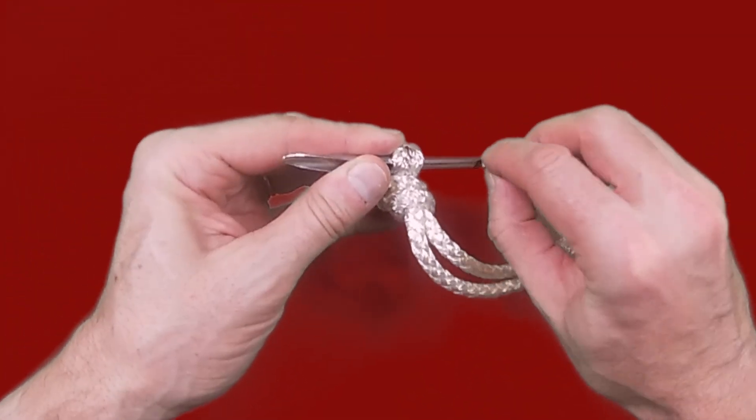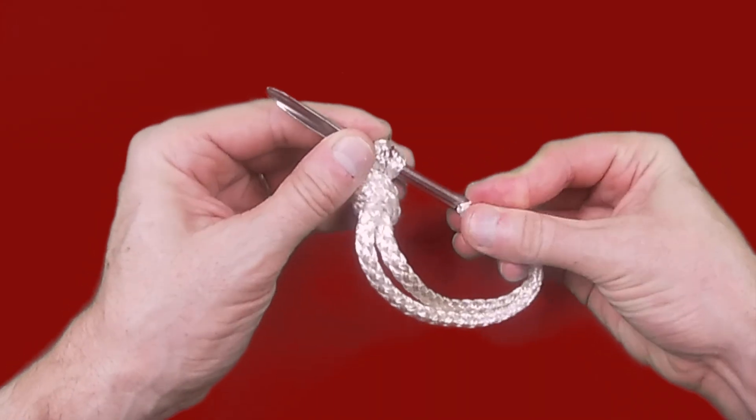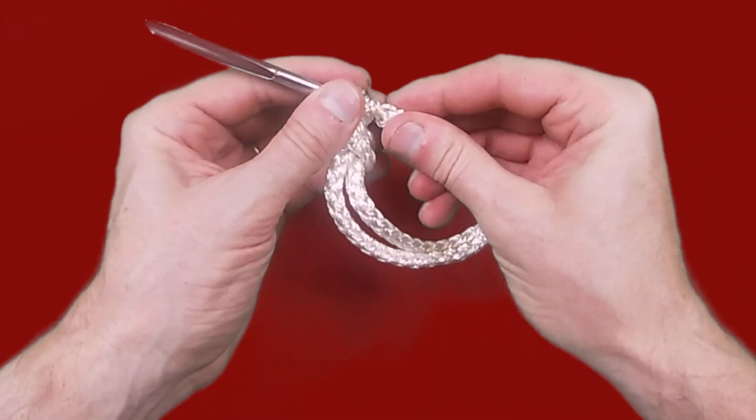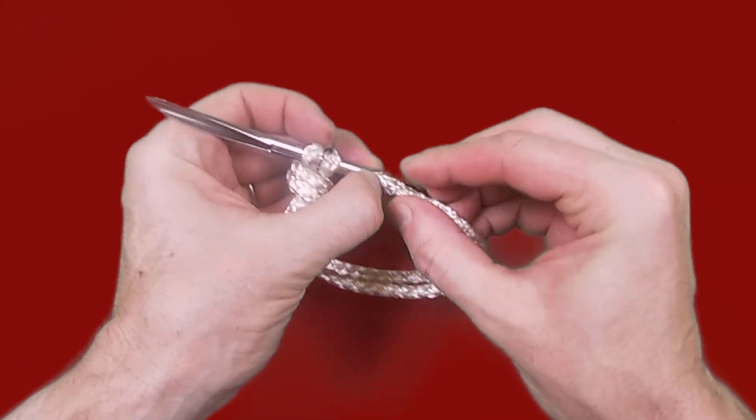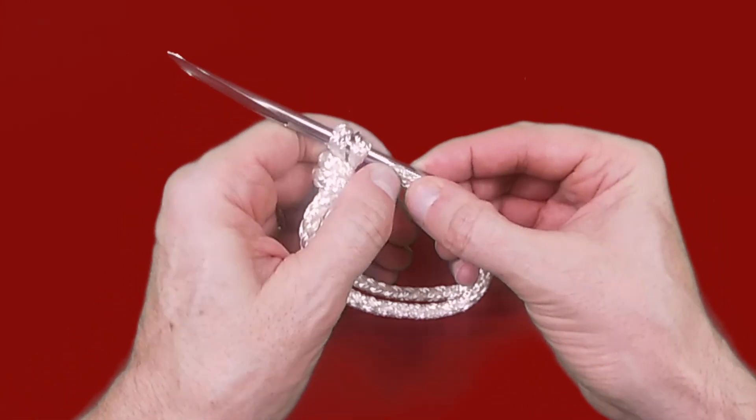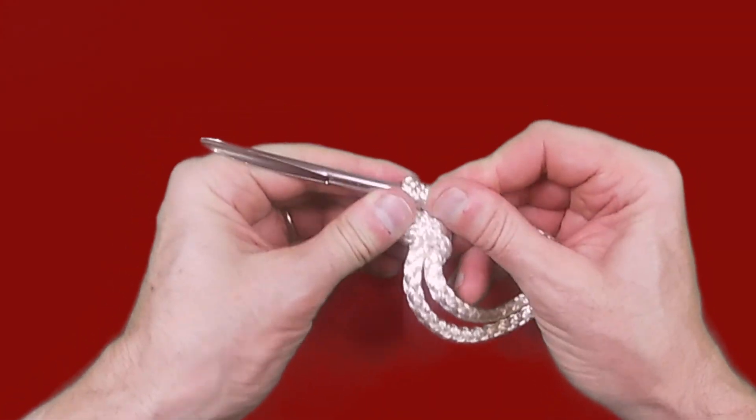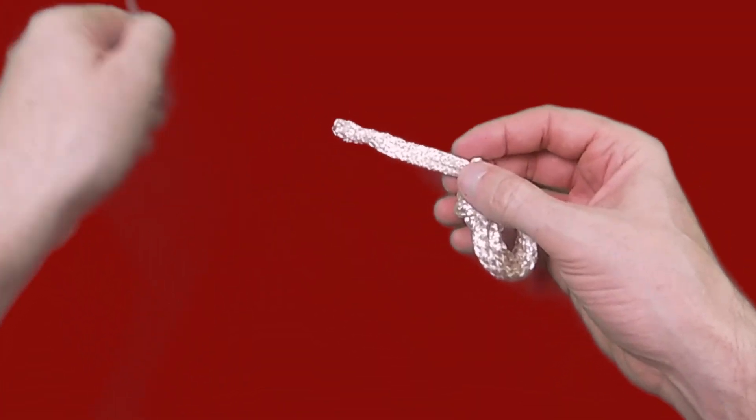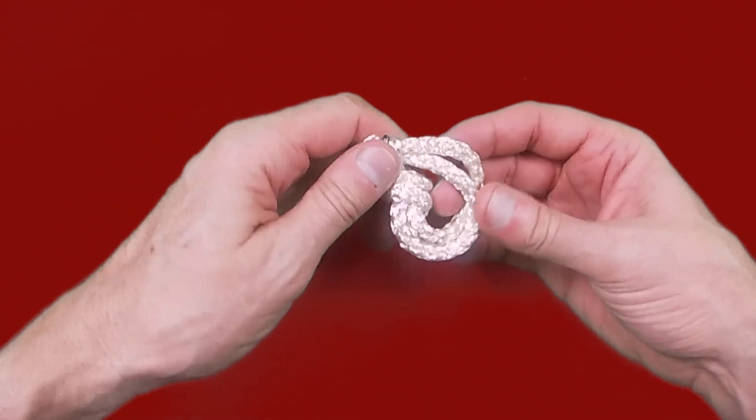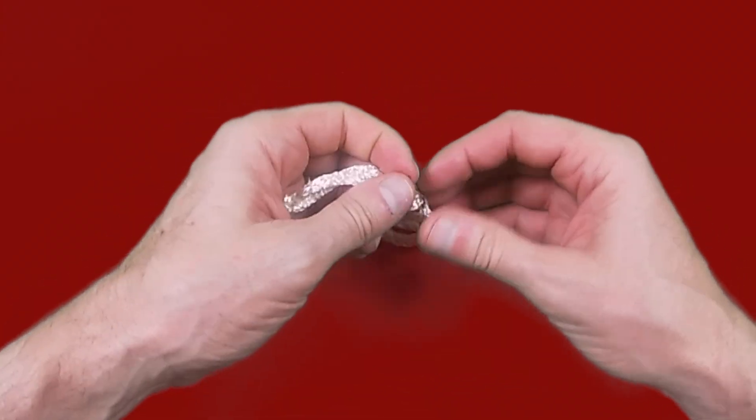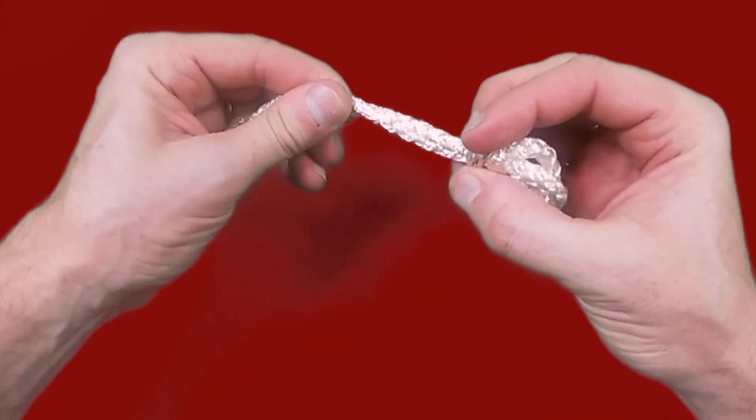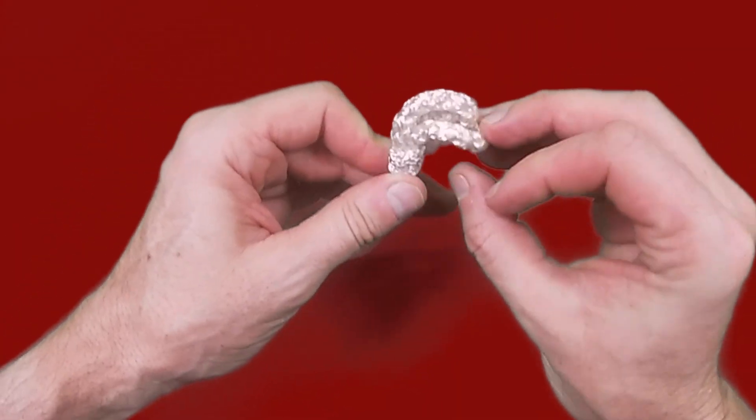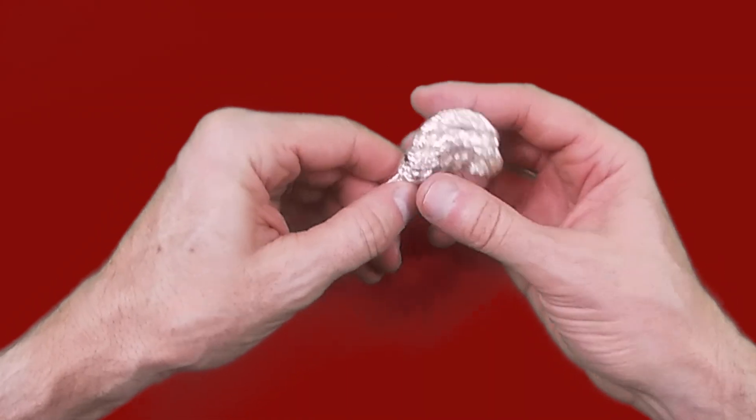Take the top end of the shackle and then feed it through the two Brummel eyes. All that's then left to do is to tighten the knot by pulling initially on the two strands together, once again ensuring that there's no twists and the lines remain parallel as you tighten them.